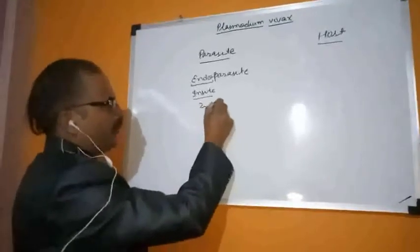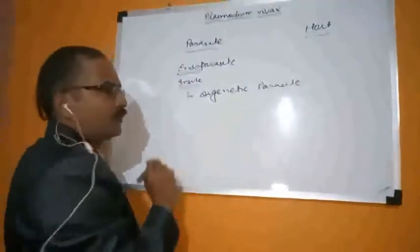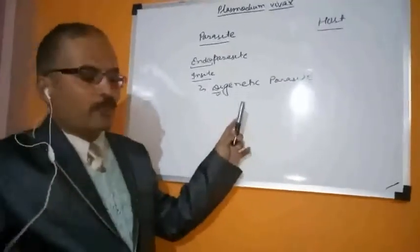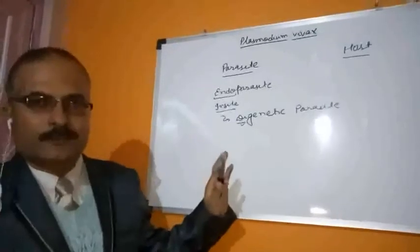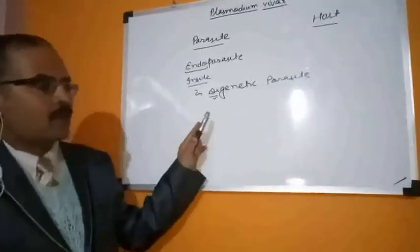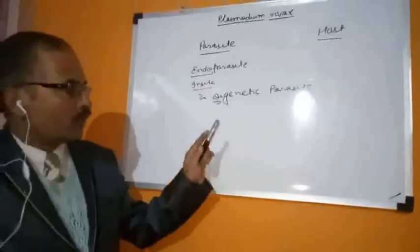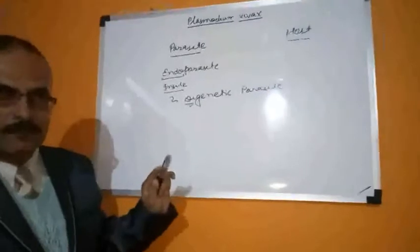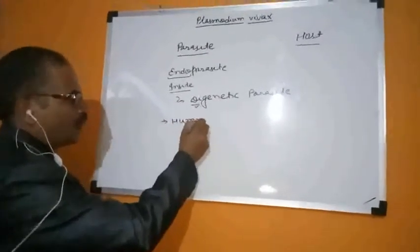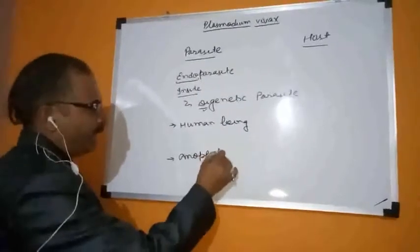Plasmodium vivax is also a type of digenetic parasite. It is given the name digenetic parasite because it requires two hosts to complete its life cycle. One host is human beings, and another is the Anopheles mosquito.